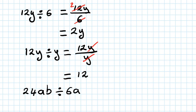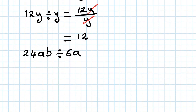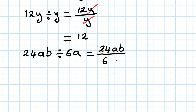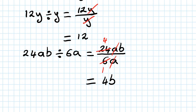Next one: 24ab divided by 6a. Write as a fraction first: 24ab over 6a. Simplify the numbers - 6 goes into 24, so 24 divided by 6 is 4, and 6 divided by 6 is 1. The a cancels, leaving 4b over 1, which equals 4b.